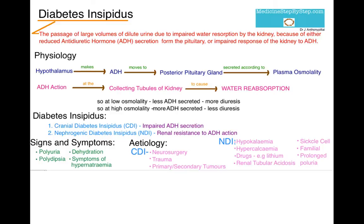So in summary, in diabetes insipidus, either ADH is not being secreted or it is not working, causing large amounts of urine to be passed by the patients. I hope this has been useful. Thank you. For more information, visit www.cdylect.org.